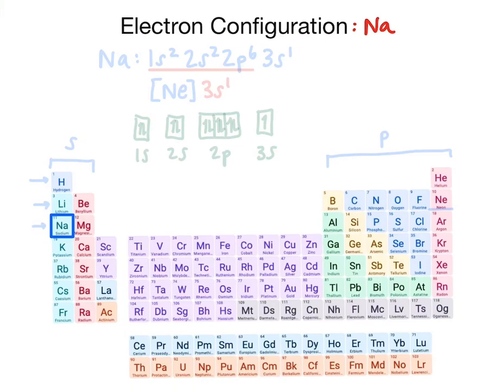Let's practice writing and drawing electron configurations. Today our example will be element 11, sodium. So let's start out by writing the full electron configuration.